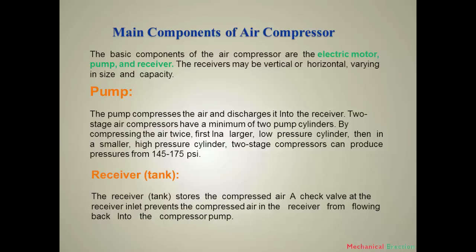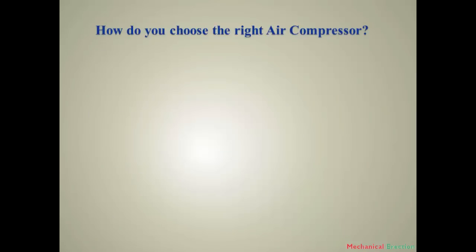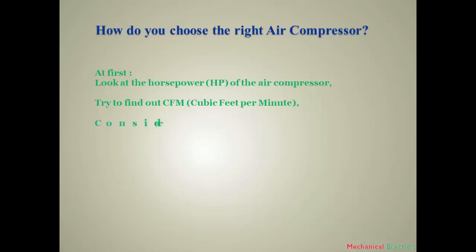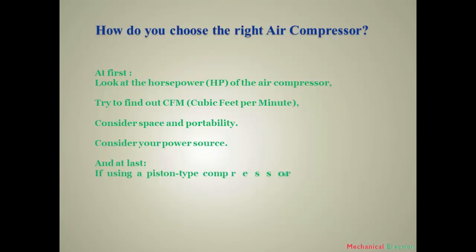Now we will know how to choose the right compressor. To choose the right compressor, we have to follow five important things. First, find out the horsepower of the air compressor, which can be found on the nameplate. Then figure out the CFM — cubic feet per minute. You must also consider the space and portability, otherwise you cannot move the compressor as needed. You have to consider your power sources. Finally, if you want to use a piston type compressor, determine how large your tank should be.